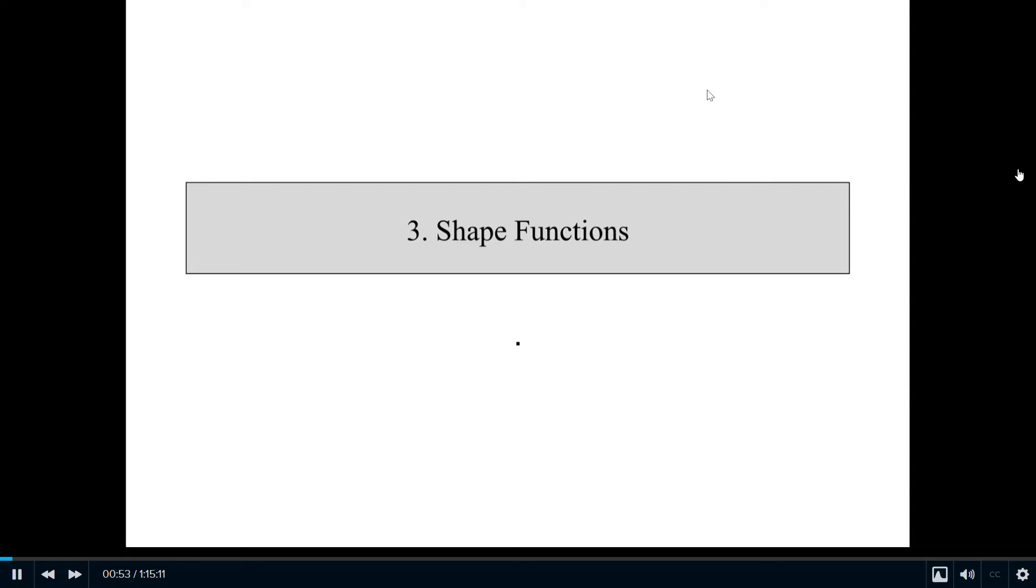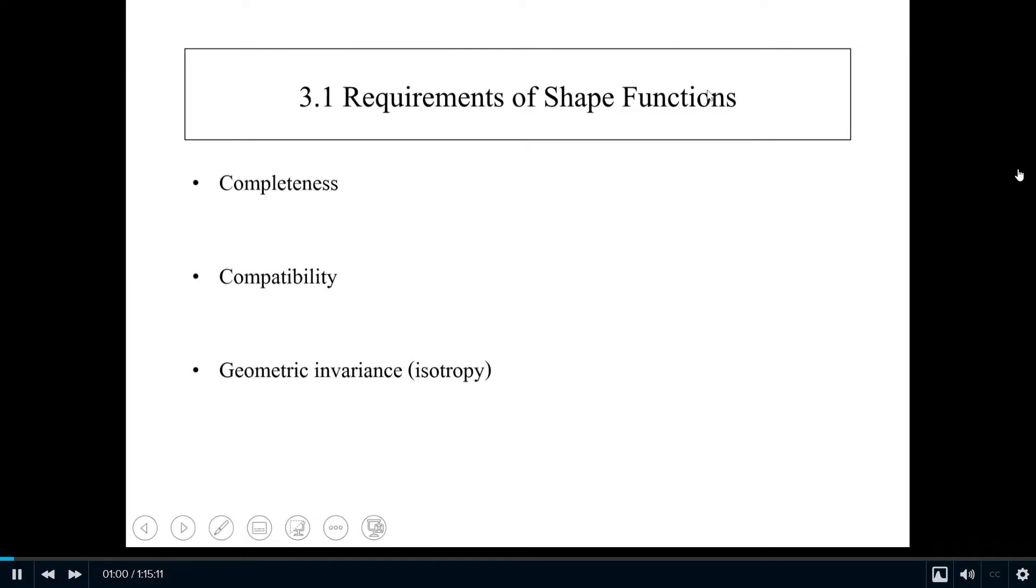There are two things we'll talk about regarding shape functions. First is the requirements of the shape functions—what you need to have for appropriate shape functions. Second is how to construct shape functions. For the requirements, shape functions should have at least these three things: completeness property, compatibility, and geometric invariance or isotropy.